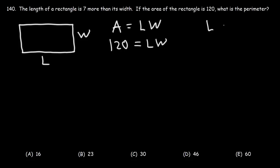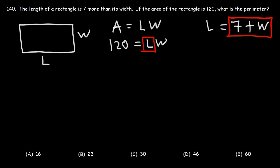We're told that the length of the rectangle is seven more than its width, so L equals seven plus W. Now we're going to replace L with seven plus W, so we have 120 equals seven plus W times W. We now have one equation with one variable, which means we can solve for W.